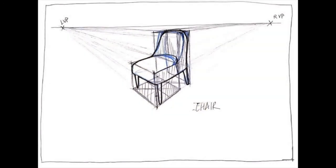Once again, in the resulting drawing, we see the border drawn freehand all around the edge of the page. She has her horizon, her eye level in, she has her two vanishing points, and her chair is below eye level, which is very important.